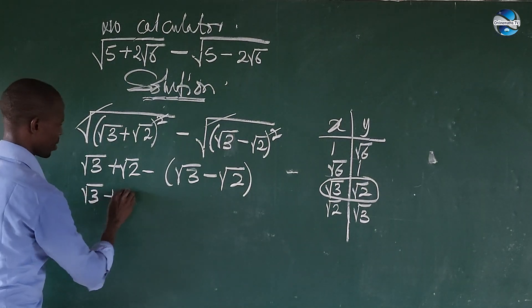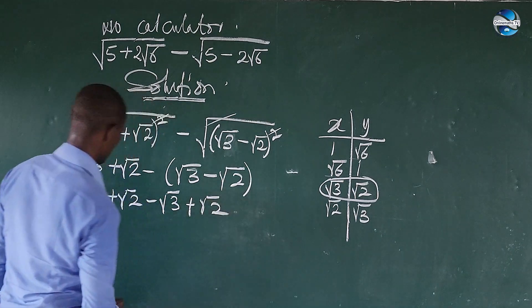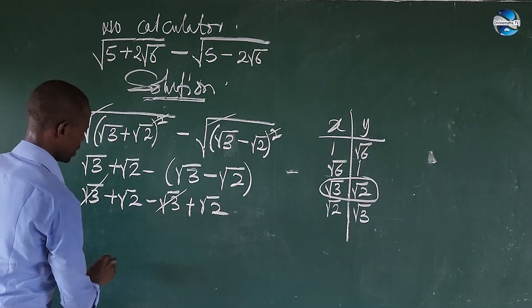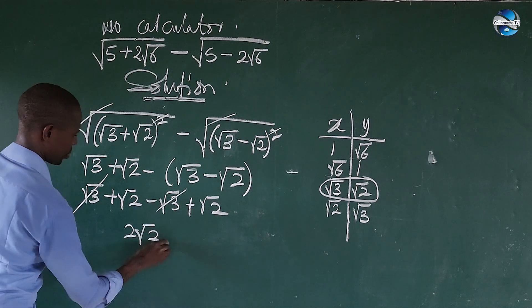So this will give us the square root of 3 plus the square root of 2 minus the square root of 3 plus the square root of 2. Again this will go with this. So if we add this, this will give us 2 root 2. So this is the final answer without the use of calculator.